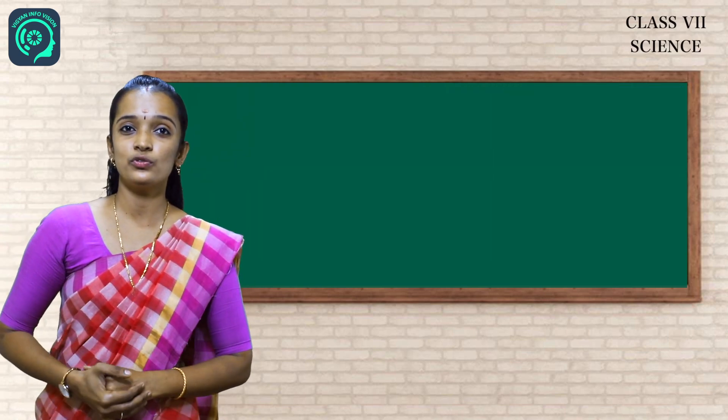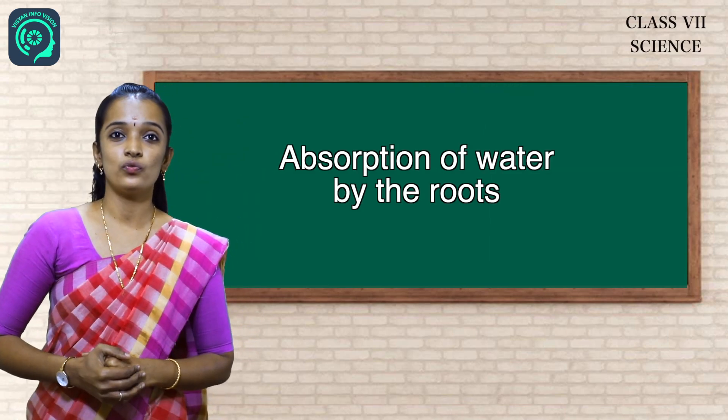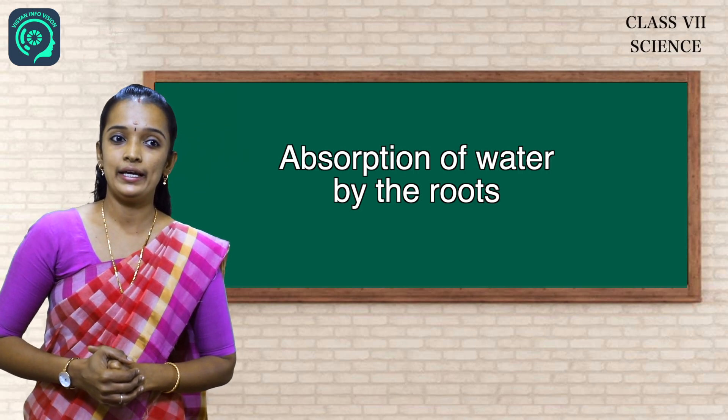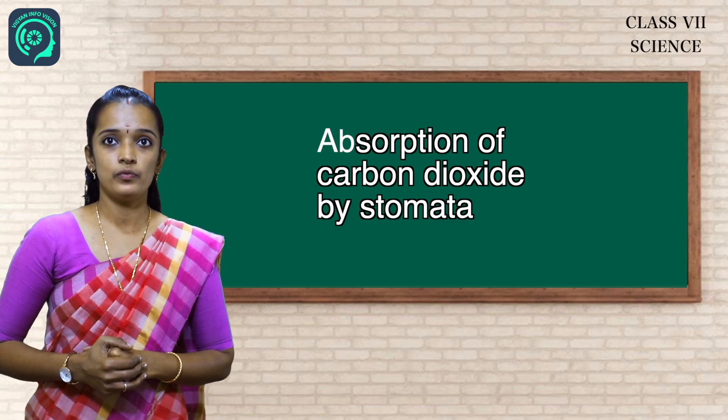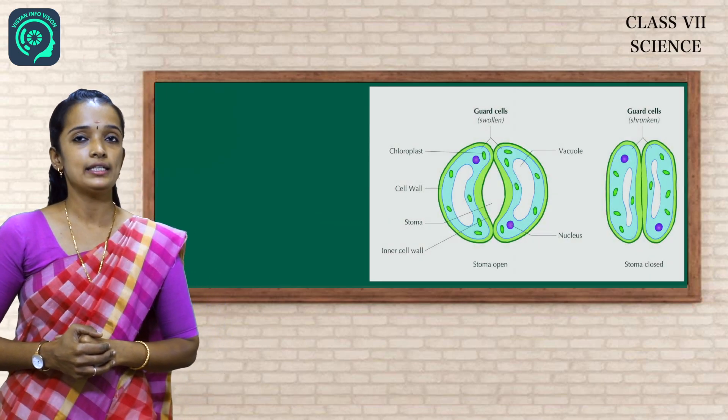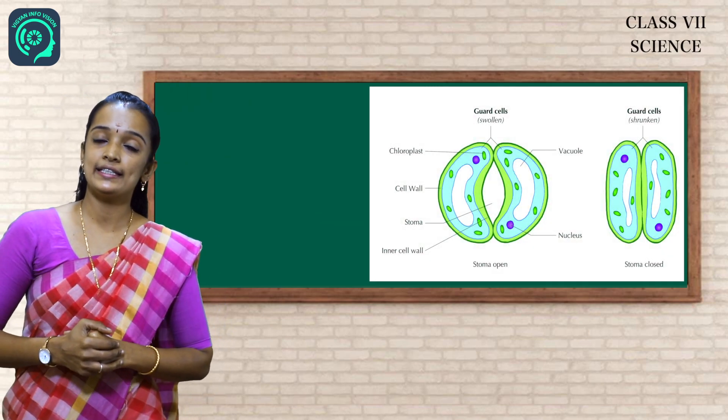What are the events of photosynthesis? The absorption of water by roots, then absorption of carbon dioxide by stomata. What is stomata? Stomata are the tiny pores seen in leaves.